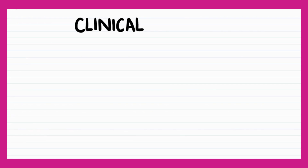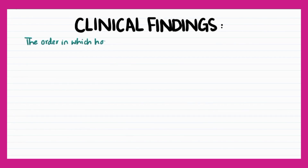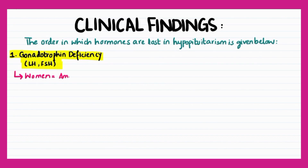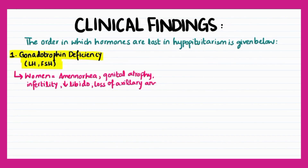Clinical findings of hypopituitarism depend on which hormone is deficient or absent. Hormones will be stated in the order in which they are lost. Gonadotropin deficiency is typically the first to occur. In women, it leads to amenorrhea, genital atrophy, infertility, decreased libido, and loss of axillary and pubic hair.